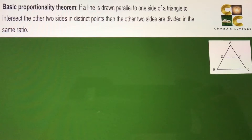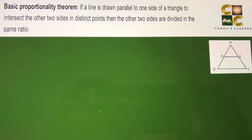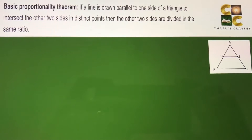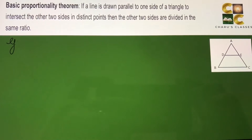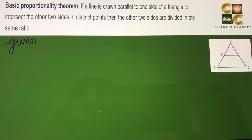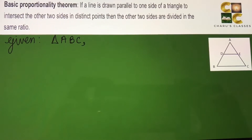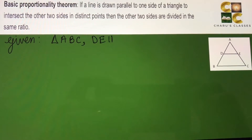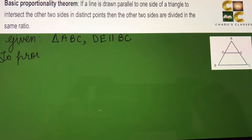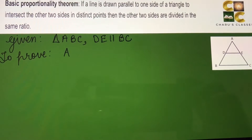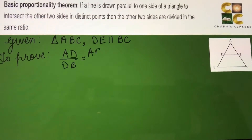So here, in this triangle, DE is parallel to BC and we have to prove AD/DB = AE/EC. Let's begin by writing what is given. We are given triangle ABC and DE is parallel to BC. We have to prove AD/DB = AE/EC.